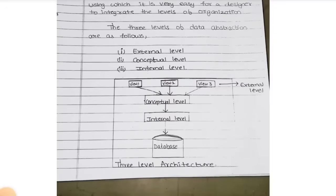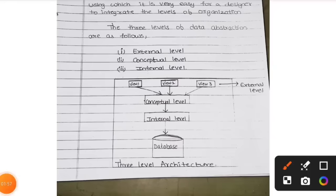The database is at the bottom where everybody's data is stored. Above that is the internal level, then the conceptual level, then the external level at the top. We are the viewers. If you are searching anything in Chrome — searching for bags, books, or something — in the external level only, we are able to see that.